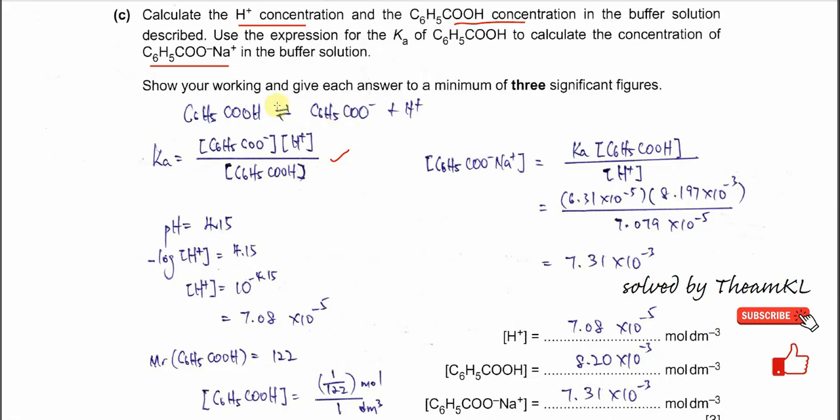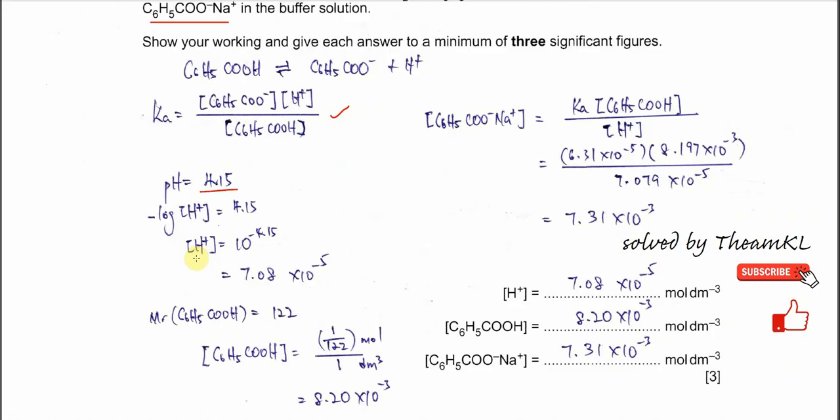First thing we need to calculate is the concentration of hydrogen ion. Because pH is given, which is 4.15, we can easily get the concentration of H+. So it's 10^-4.15, so you get 7.08 times 10^-5.